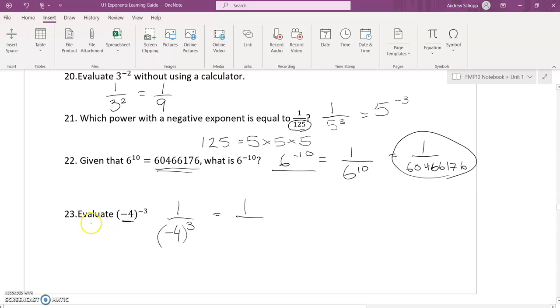The question is asking me to evaluate, so expand or simplify these exponents. So (-4)^3 is negative 4 times negative 4 times negative 4. Negative 4 times negative 4 is positive 16. Positive 16 times negative 4 is negative 64. So the answer is -1/64.